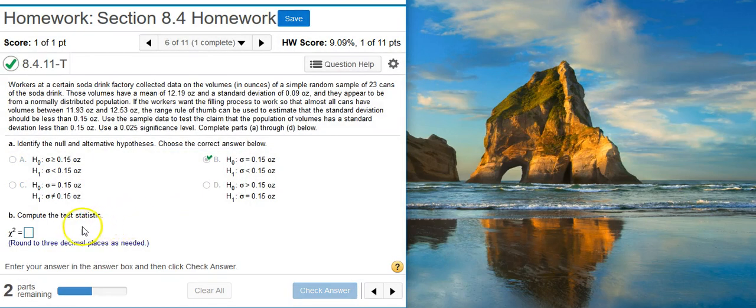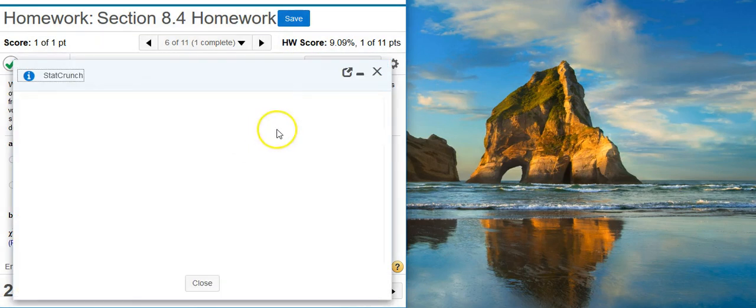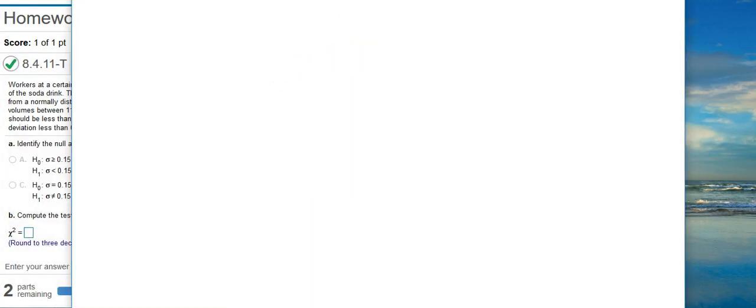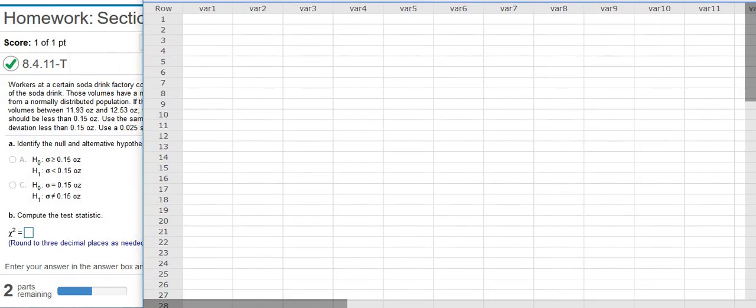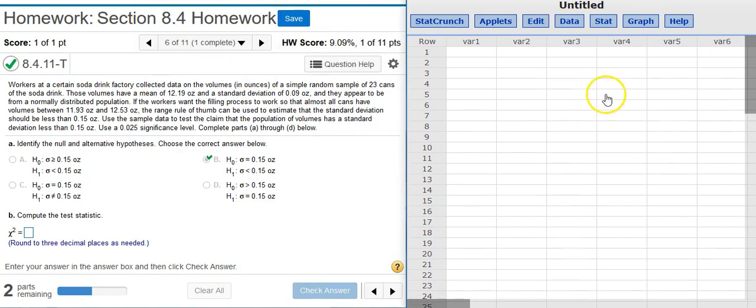Now, part B says compute the test statistic. We can get the test statistic by performing our hypothesis test in StatCrunch. So I'm going to pull up StatCrunch here, and I'll pop that window out, and then I'm going to resize this window so we can see a little bit better what's going on here.